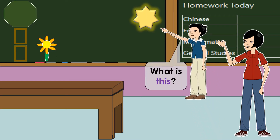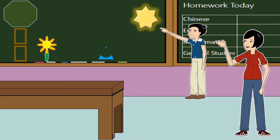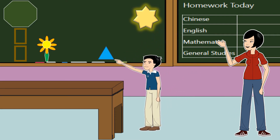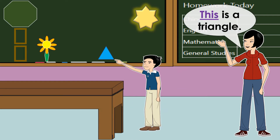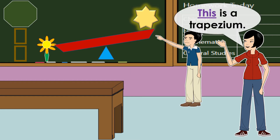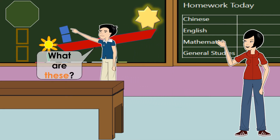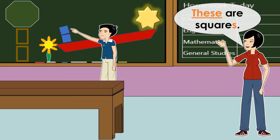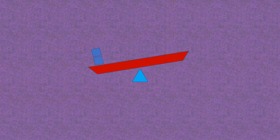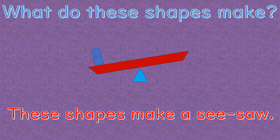What is this? This is a star. What is this? This is a triangle. What is this? This is a trapezium. What are these? These are squares. What do these shapes make? These shapes make a seesaw.